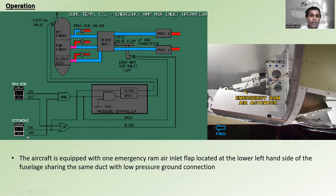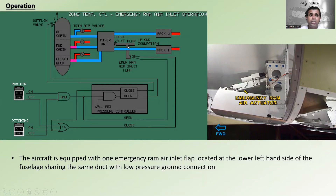The aircraft is equipped with one emergency ram air inlet flap located at the lower left-hand side of the fuselage, sharing the same duct with the low pressure ground connections. You can see the emergency ram air inlet flap here — there is a flap and there is a check valve. This is the actual view of the emergency ram air actuator.